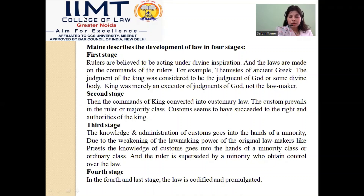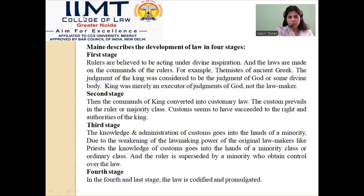This is the second stage: the commands of the king converted into customary law. The custom prevails in the ruler or majority class. Customs seem to have succeeded to the rights and authorities of the king. Third stage: the knowledge and administration of customs goes into the hands of a minority class, and the ruler is superseded by that minority who obtained control over the law. The last stage is that law is codified and promulgated. So: the king promulgates a law believed given by a supreme authority, it converts into customary law, it comes into the hands of the priests, and then it is codified and promulgated.